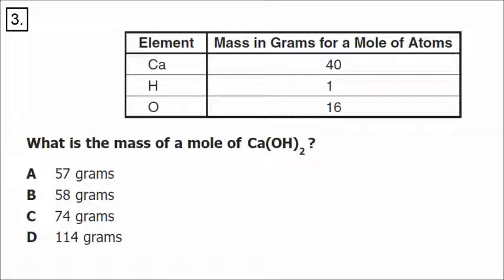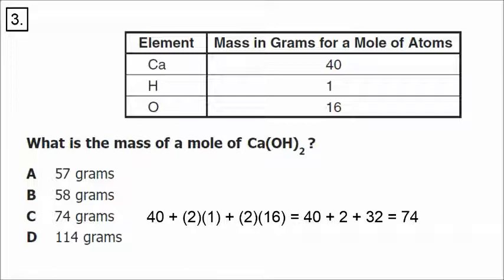Number three: what is the mass of a mole of calcium hydroxide? The formula for calcium hydroxide is Ca(OH)2, meaning one calcium, two oxygens, and two hydrogens. The problem gives us the molar masses, which we could also find in the periodic table. Calcium has a molar mass of 40. There are two hydrogens, so 2 times 1, and two oxygens, so 2 times 16. Adding these up: 40 plus 2 plus 32 equals 74 grams per mole — the molar mass of calcium hydroxide.